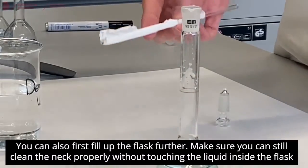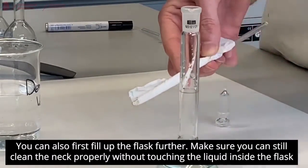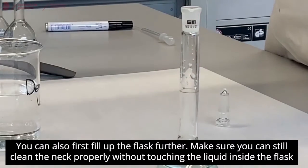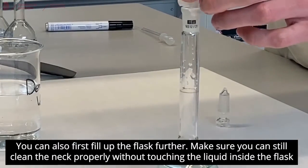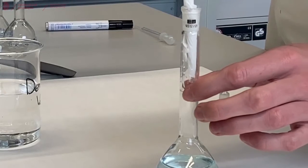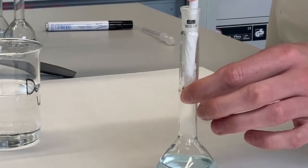To do that, we can use a glass rod with a piece of tissue paper, or you can use a spatula, and then you carefully dip it into the volumetric flask and soak up all the liquid that's on the top part of the volumetric flask.